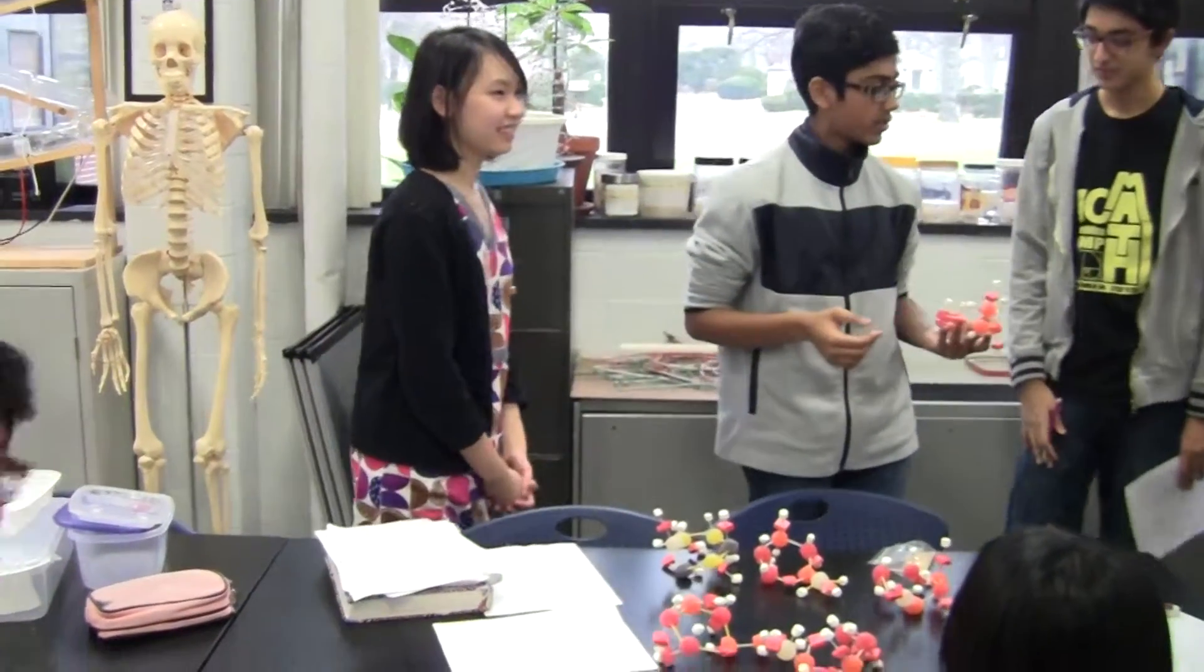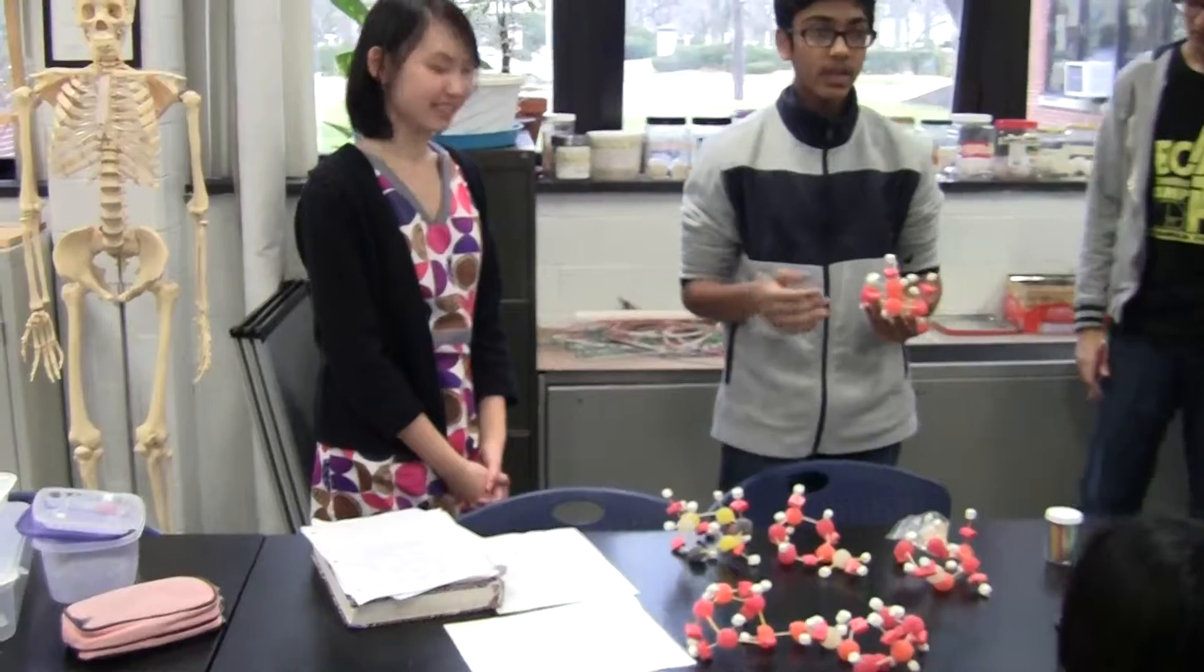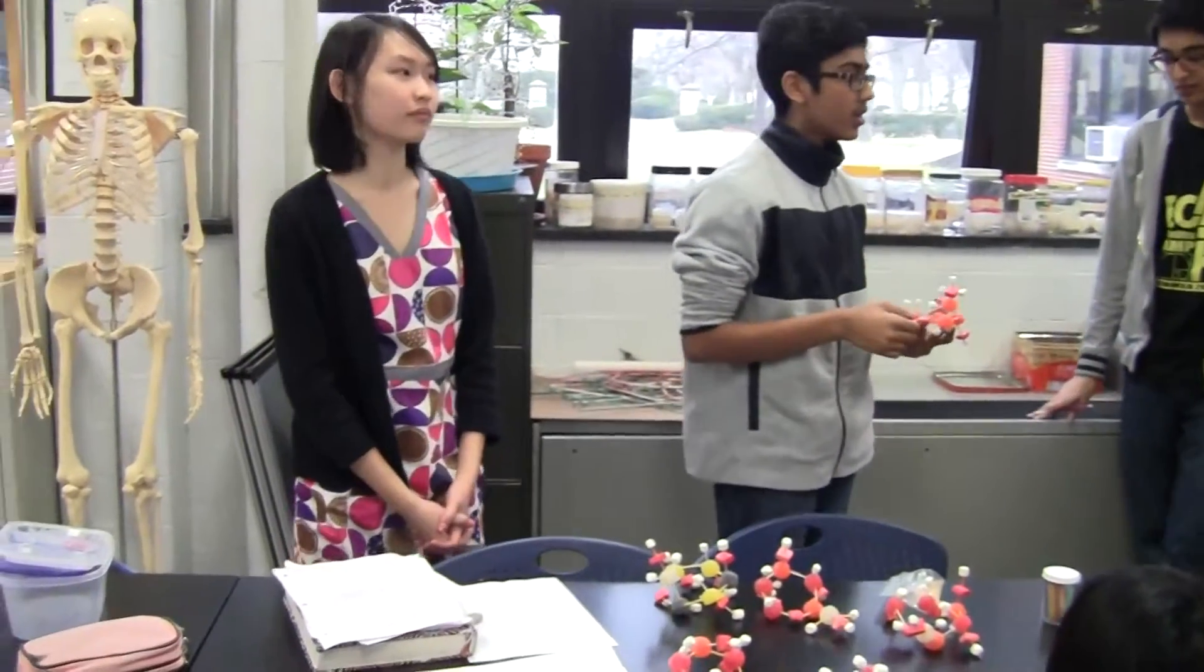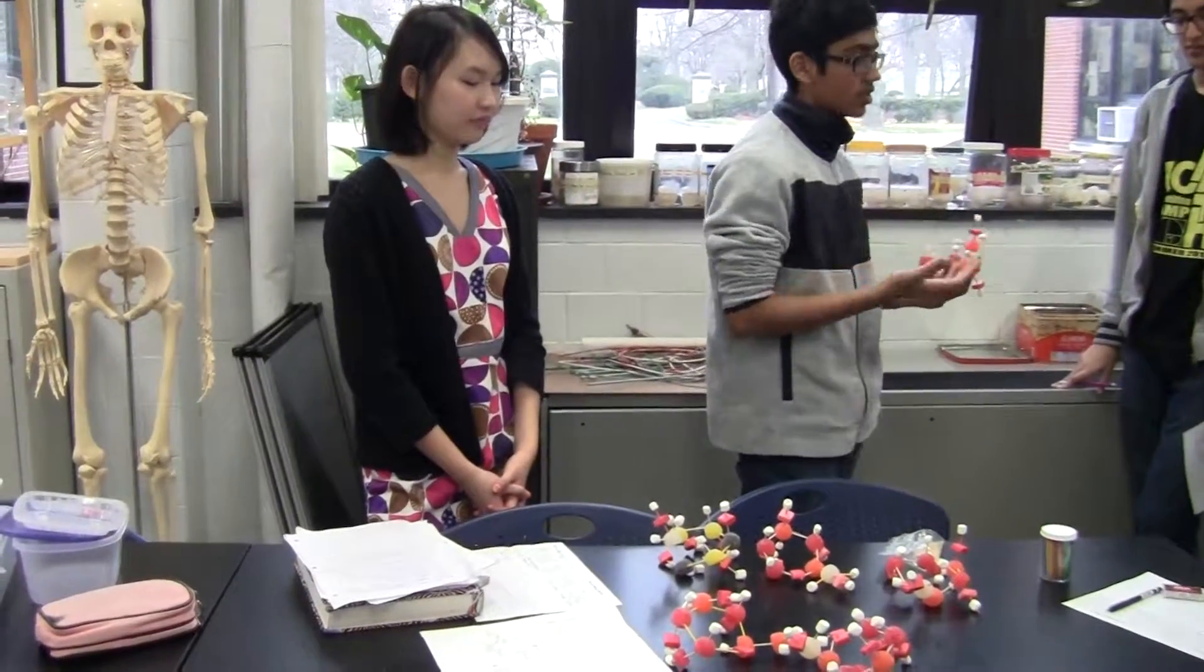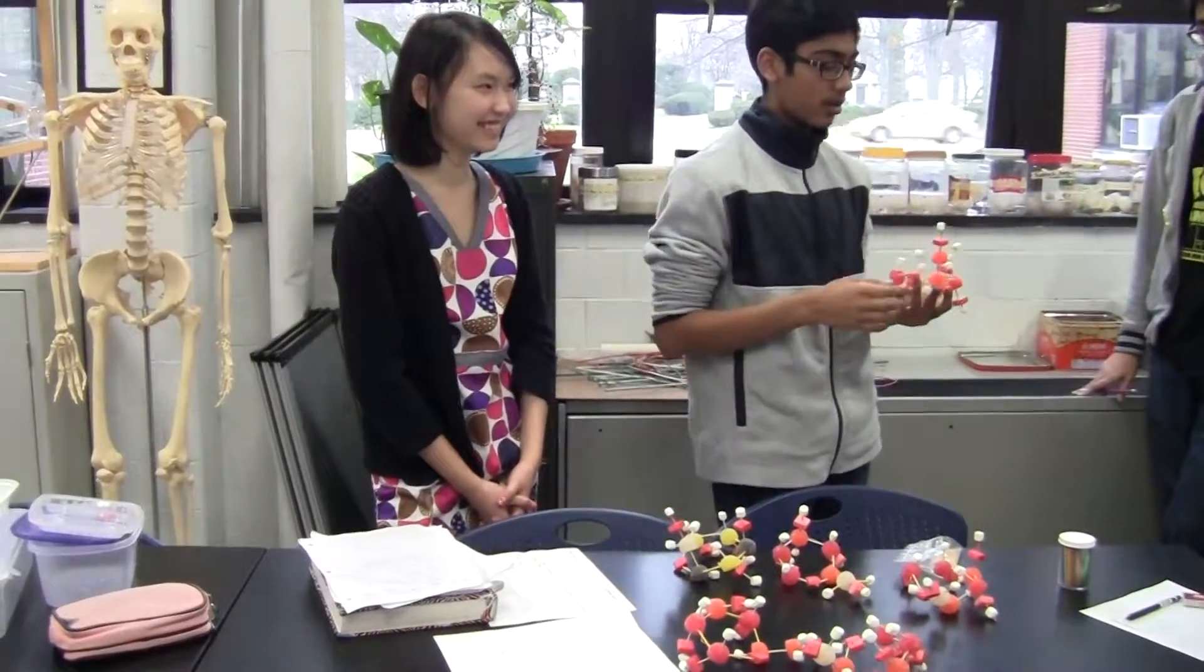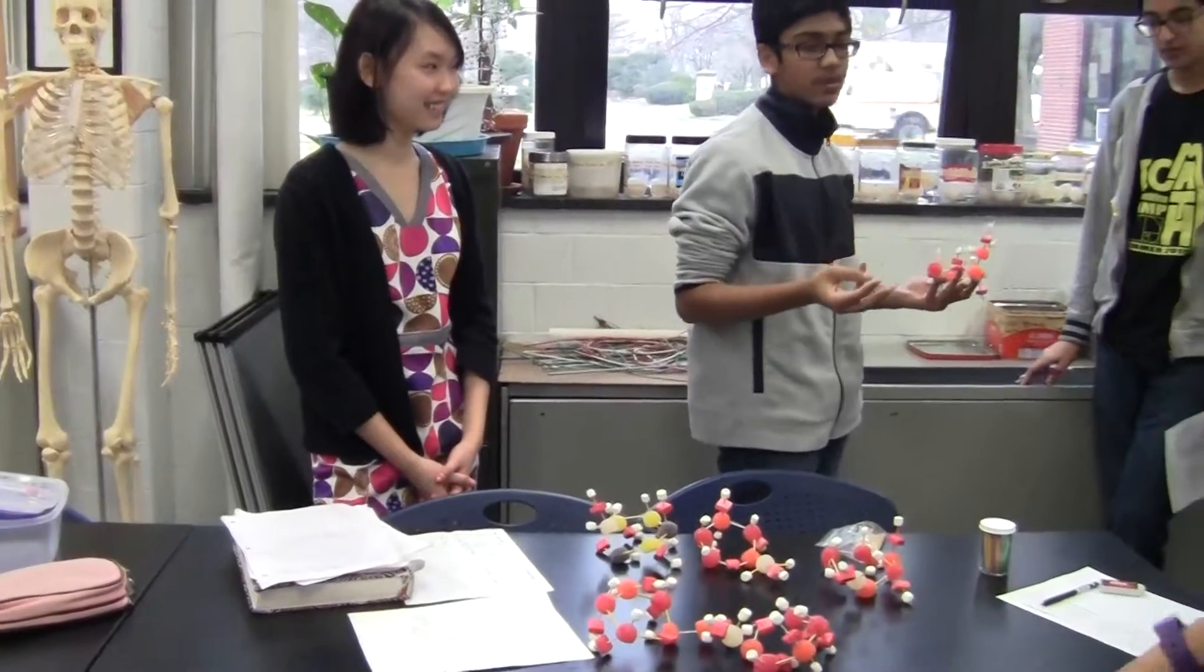Okay, so our group was in charge of showing how carbohydrates are made and also the interactions that they have. Carbohydrates are a main source of energy for the body, especially in the form of starches, sugars, and other things. There are three main types of carbohydrates.